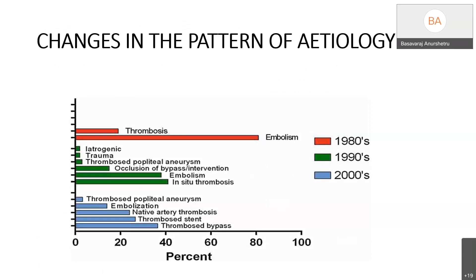As we see in this graph, there is a change in the pattern of etiology. In the 1980s, embolism used to be the most common cause, which later shifted to in-situ thrombosis in the 90s. And now it has been proposed that thrombosis of bypass or intervention stents is the main cause of thrombosis.